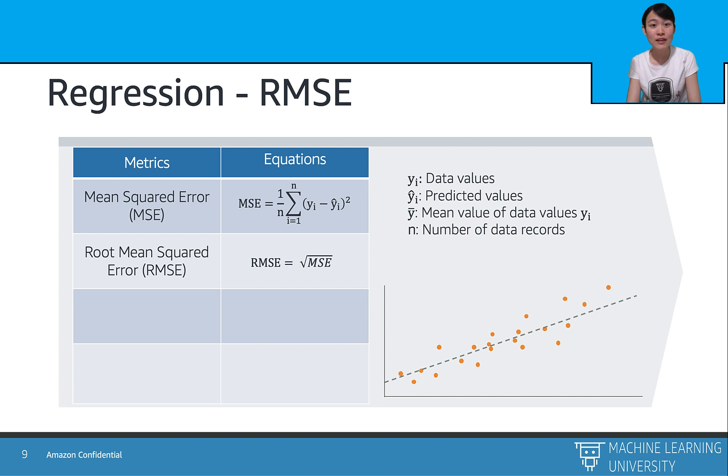And the second one is the root mean square error or RMSE. It is the most widely used matrix for regression tasks. And it is the square root of the average squared difference between the target value and the value predicted by the model. It is preferred more in some cases because the errors are first squared before averaging, which poses a high penalty on large errors. This implies that the RMSE is useful when large errors are undesired.